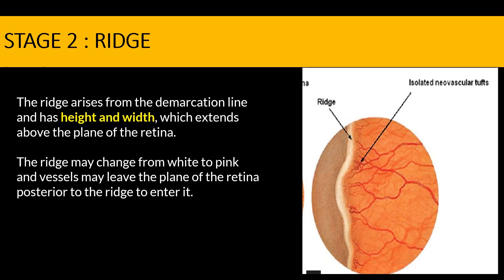In stage two ROP, what is typical is the presence of a ridge at the junction of the vascular and avascular retina. The difference between the ridge and the demarcation line is that the demarcation line was a thin flat line in the plane of the retina, whereas as it increases it acquires a width and height, growing above the plane of retina to form a ridge. Vessels can grow towards the ridge but will never grow towards the vitreous — they are limited to the ridge in stage two.